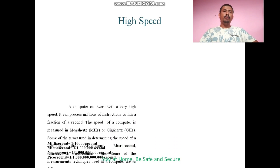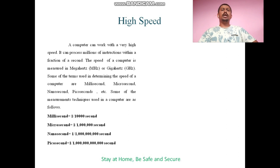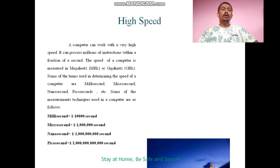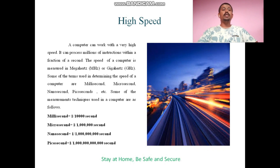A computer can process millions of instructions within a fraction of a second. The speed of a computer is measured in megahertz or gigahertz. There are a number of terms used to understand the speed of a computer, like millisecond, microsecond, nanosecond, picosecond, etc. These measurement units are listed on the slide — you can go through it to get the details.